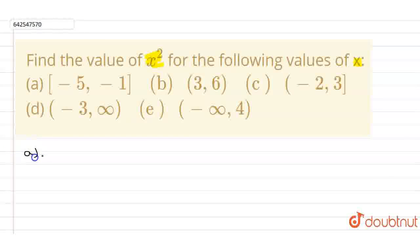So the first part is minus 5 to minus 1. So our x belongs to minus 1 here and here it is minus 5, minus 5 to minus 1. So if I do x square, then it is 1 to 25.